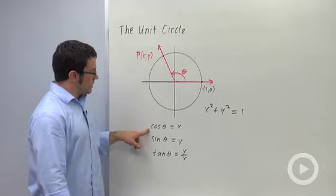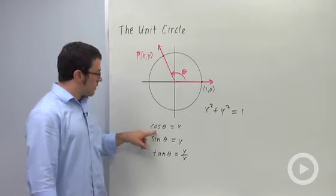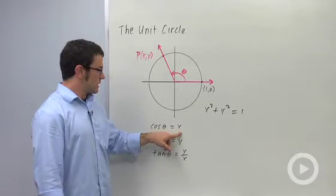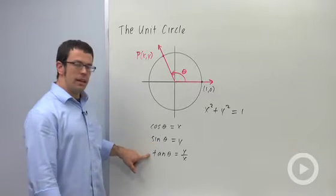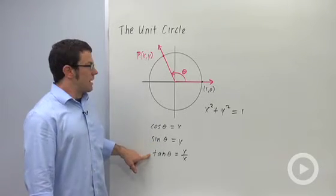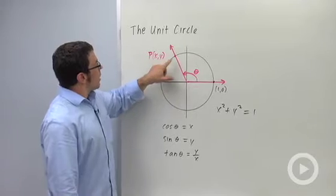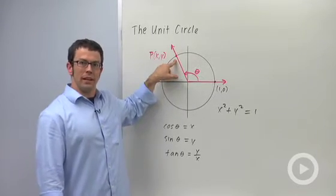Recall the definitions of cosine, sine, and tangent. Cosine theta equals x, sine theta equals y, and tangent theta equals y over x, where x and y are the coordinates of the point on the terminal side of the angle.